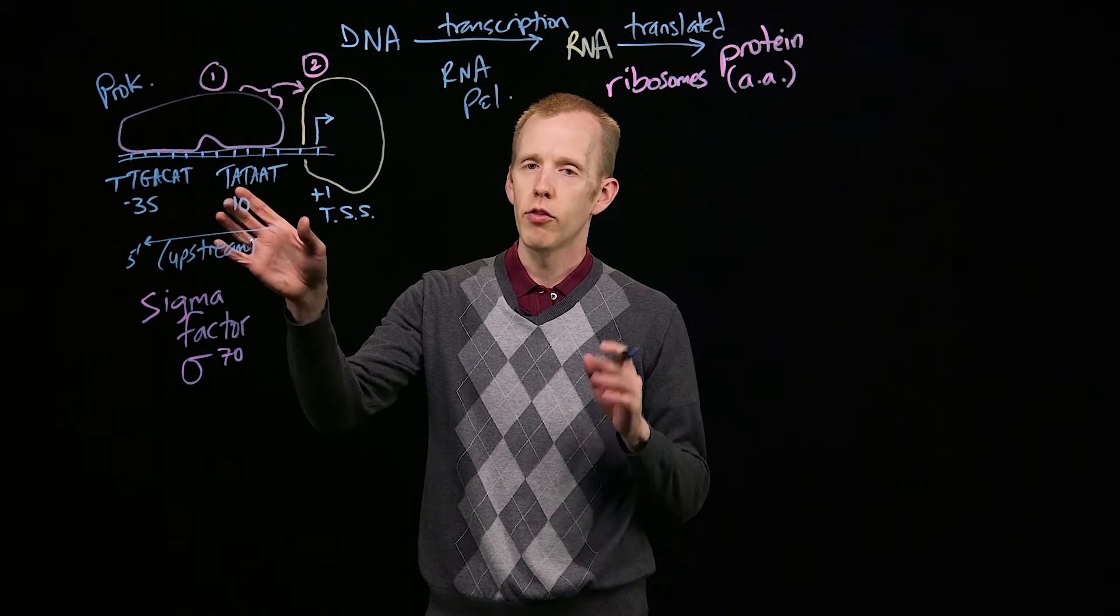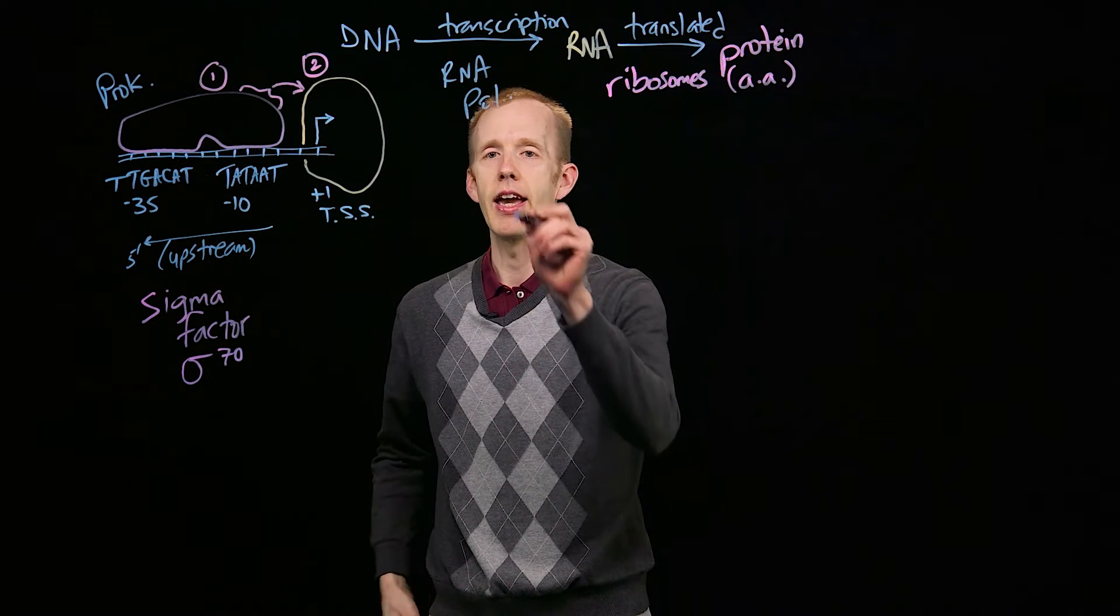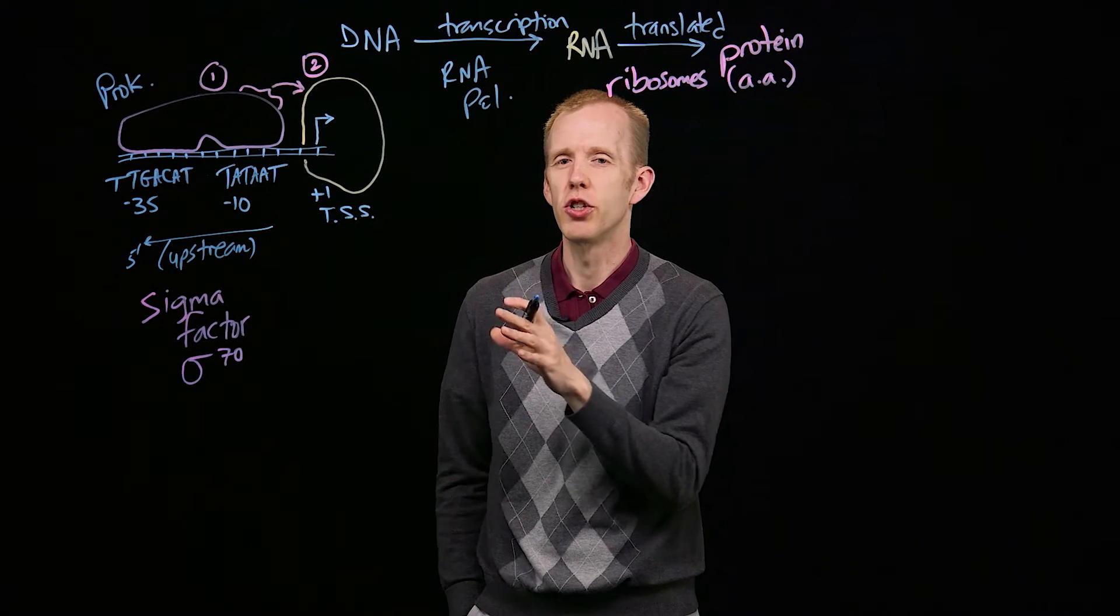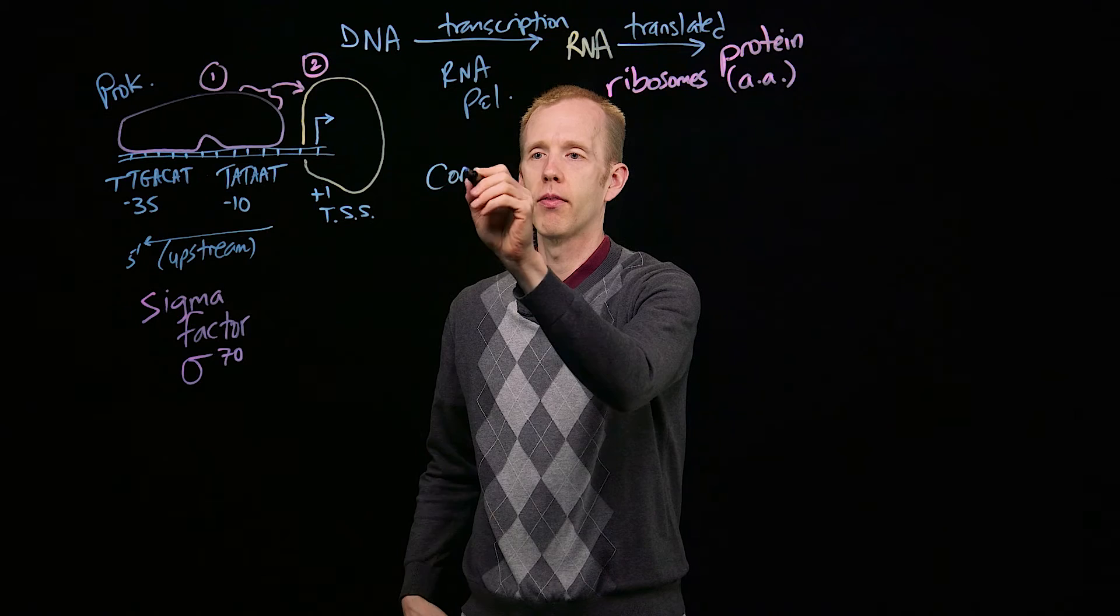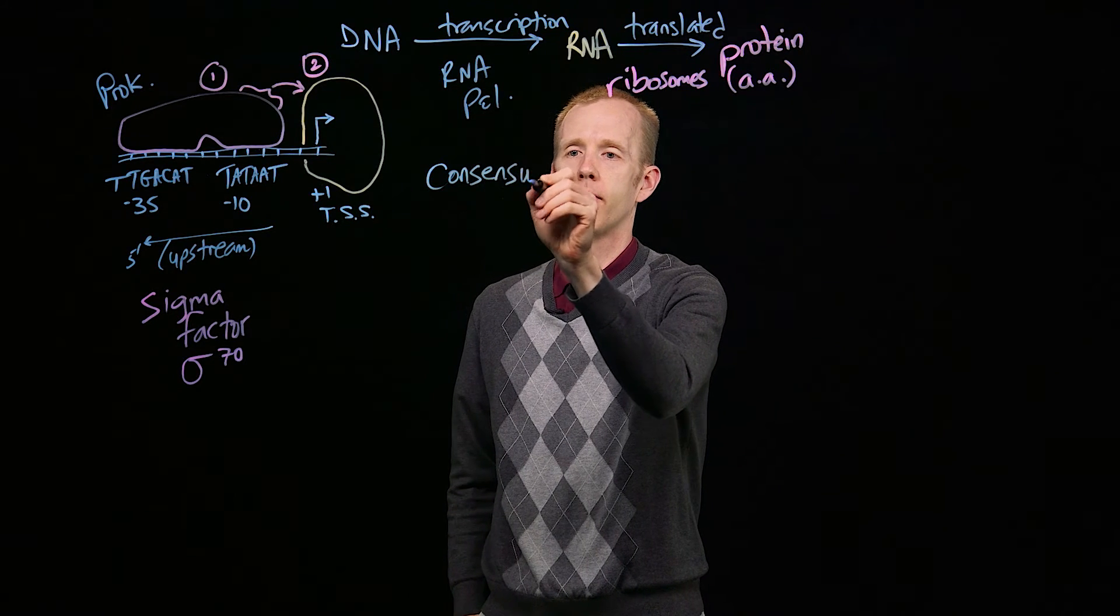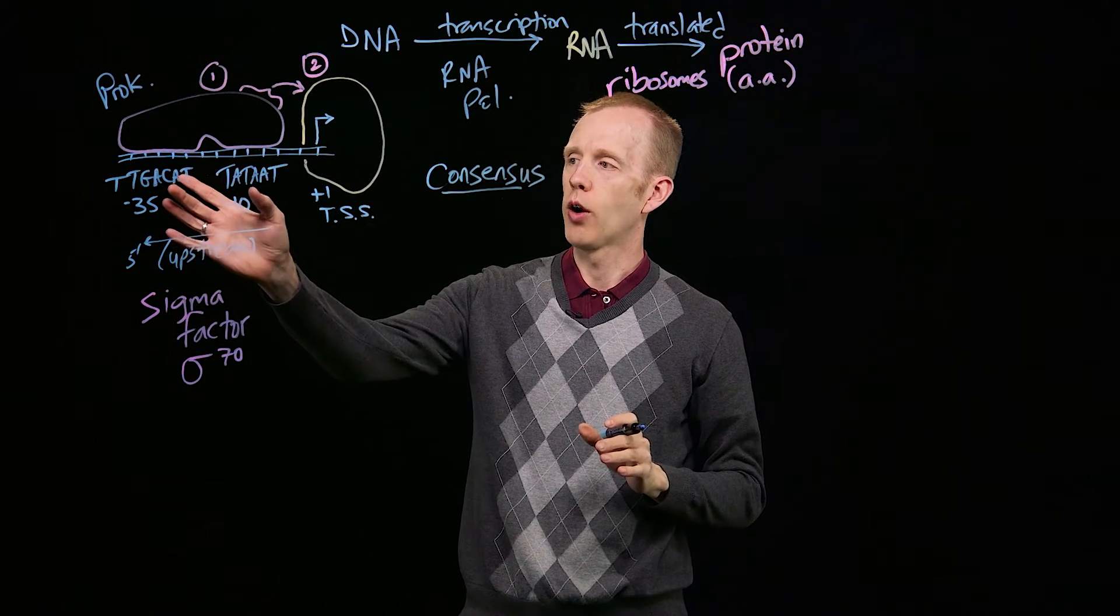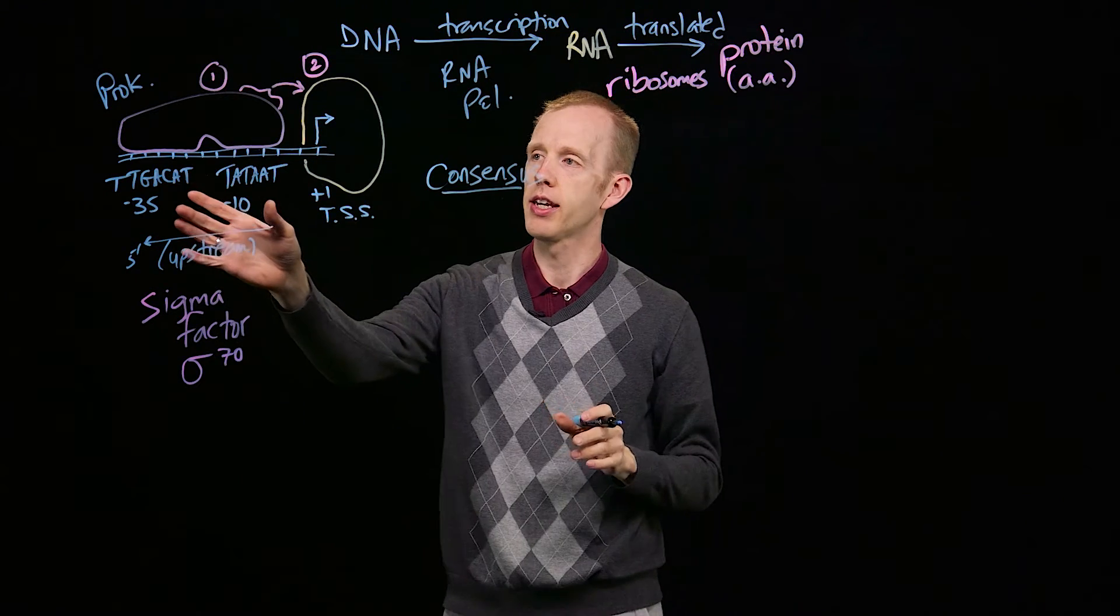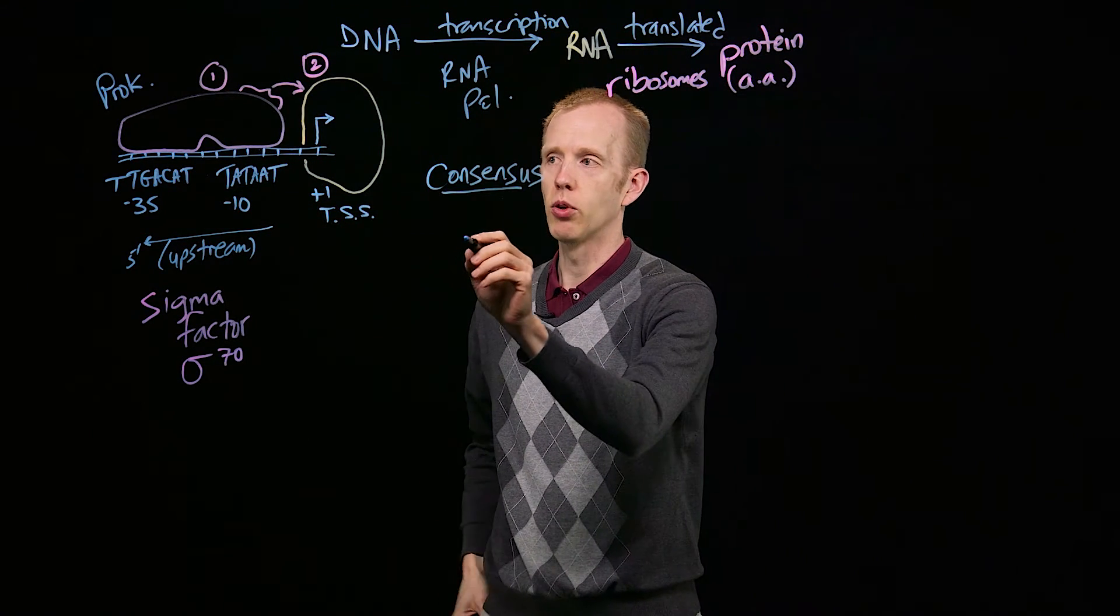I want everybody to realize that these DNA sequences, like the minus 10 sequence, T-A-T-A-A-T, are a type of sequence that is sort of a generic or an average sequence called a consensus sequence. And what that means is, the way that geneticists figured out which DNA sequences a sigma factor binds to, is they would take parts of DNA molecules that these proteins bind and they would look at the sequences.